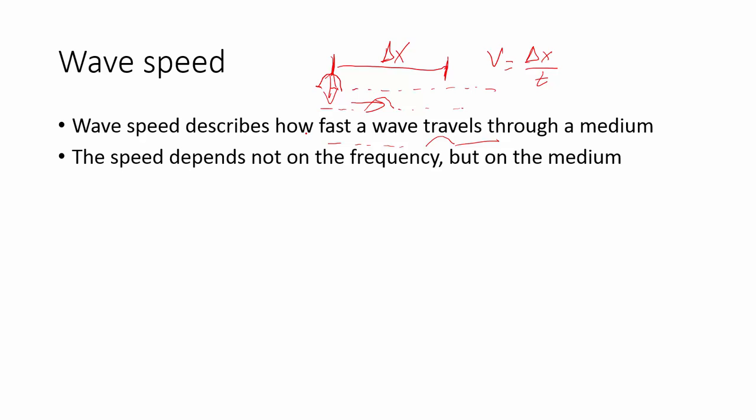Sound waves travel through air kind of fast at 343 meters per second. They travel through solids even faster and liquids are somewhere in between. The speed depends on what it's moving through, not on the frequency of the wave. Changing the frequency of a wave does not change its speed.